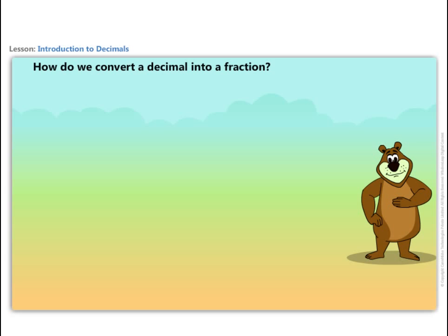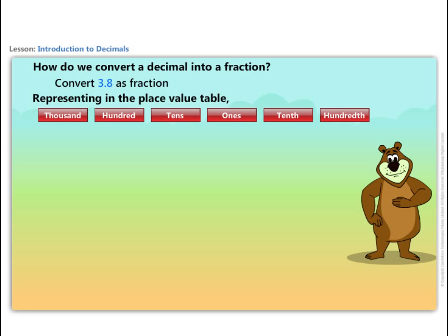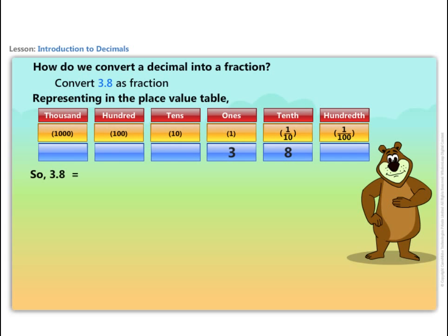How do we convert a decimal into a fraction? Let us convert 3.8 as a fraction. For this, we need to first represent it in the place value table. From the place value table, we find that 3.8 is equal to three times ones and eight times tenths. This can also be written as 30 by 10 plus 8 by 10, which is equal to 38 by 10.